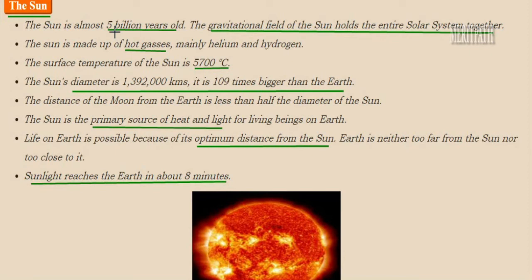Let's talk about the sun. The age of the sun is almost 5 billion years old. There is a gravitational field in the sun which holds the entire solar system together — all the planets, comets, and moons are held together along with the sun because of this gravitational field. The sun is made up of hot gases such as helium and hydrogen, and the temperature of the sun is 5,700 degrees centigrade.